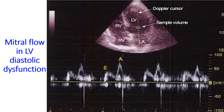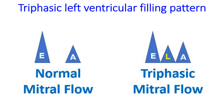The upper half of the image shows the apical 4-chamber view of the heart. The Doppler cursor and sample volume are seen along the midline of the left ventricle. The lower half shows the Doppler flow pattern across the mitral valve, with time on the X axis and velocity in centimetres per second on the Y axis. A triphasic left ventricular filling pattern with an additional mid-diastolic wave — called the T wave or L wave — can occur in left ventricular diastolic dysfunction, especially in hypertrophic cardiomyopathy. Another video on this channel describes triphasic mitral flow in more detail.